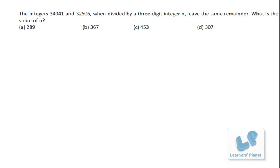Suppose I take two integers, maybe 11 and 15. The same problem I'm solving: the integers 11 and 15, when divided by an integer, leave the same remainder. What is the integer? Instead of 34041, I'm taking 11, and instead of 32506, I'm taking 15.